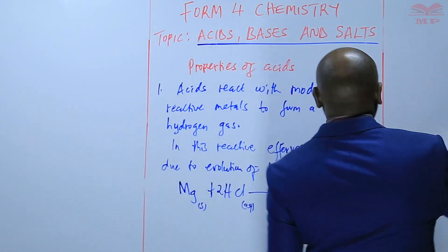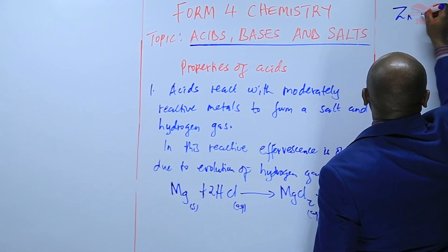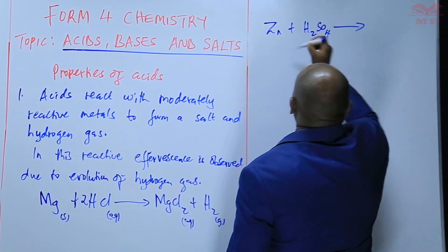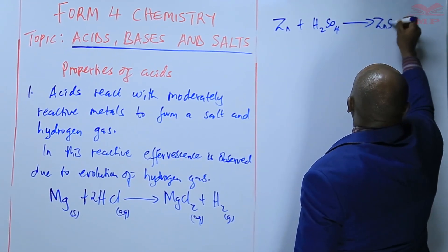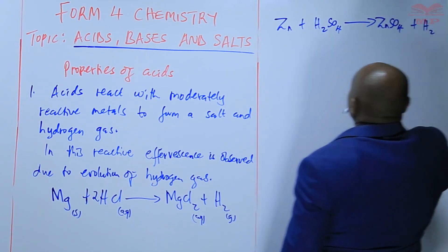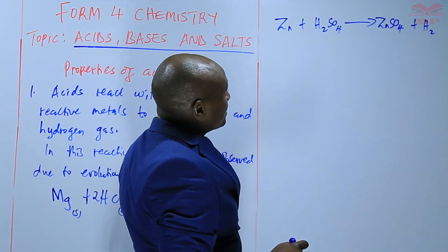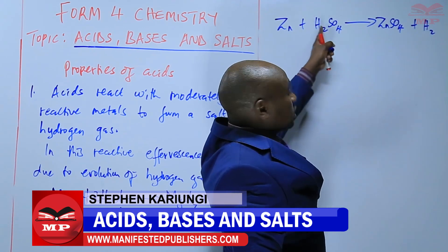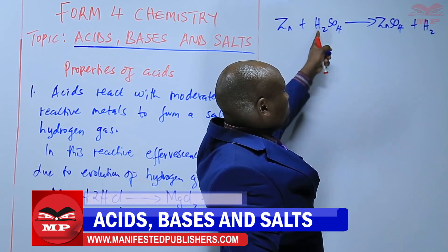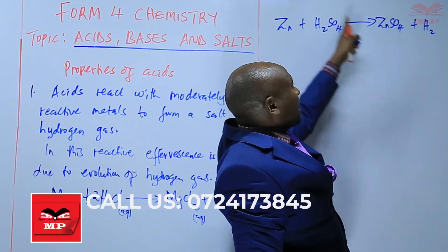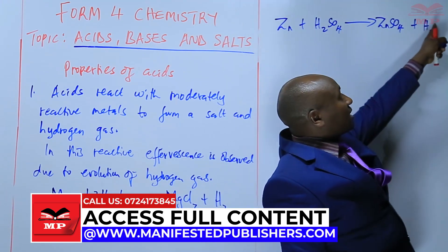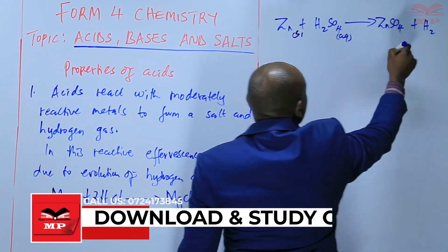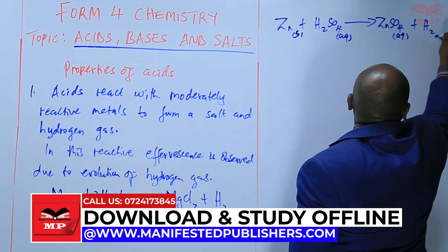Another example: zinc plus sulfuric acid gives zinc sulfate plus hydrogen gas. That equation is already balanced. The zinc has completely replaced all the hydrogen atoms in the acid to form zinc sulfate, and the displaced hydrogen forms hydrogen gas. Zinc is solid, sulfuric acid is aqueous, zinc sulfate is aqueous, and hydrogen is a gas.